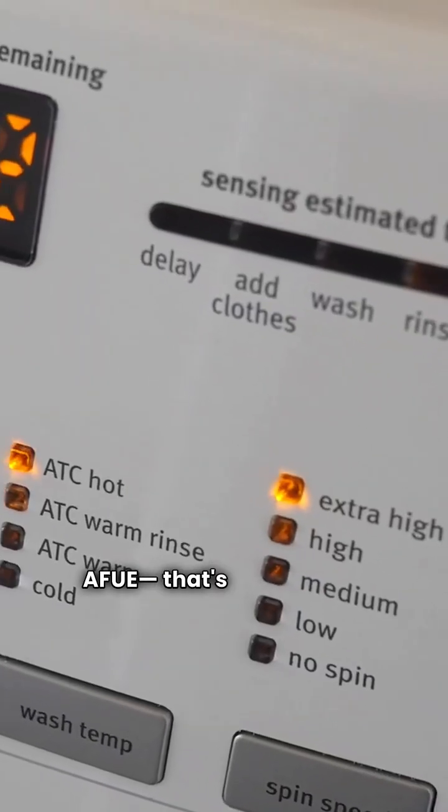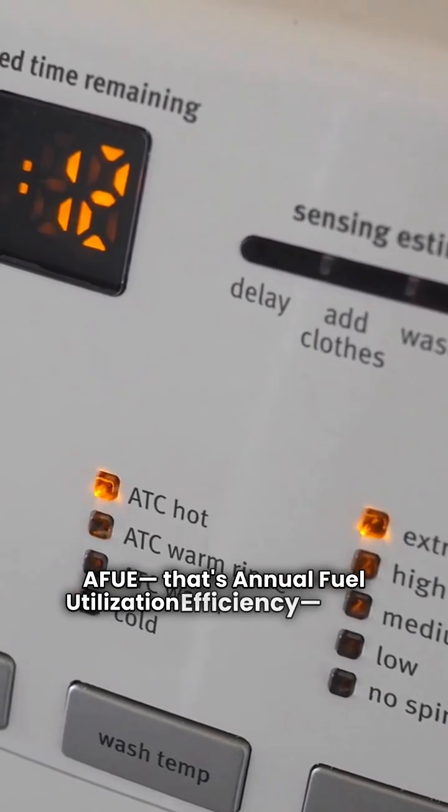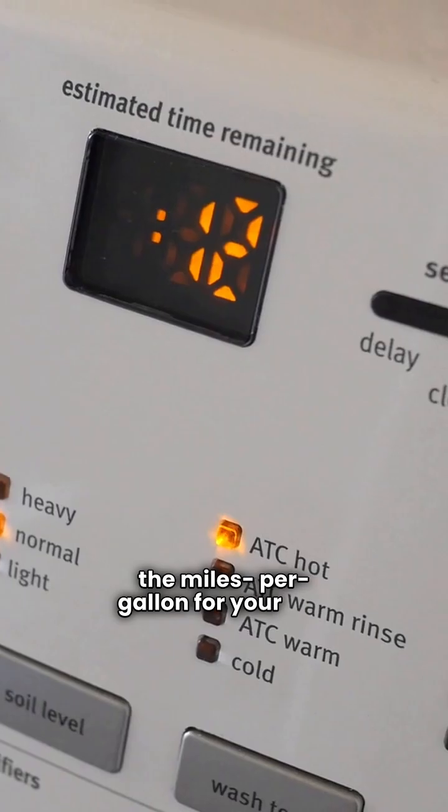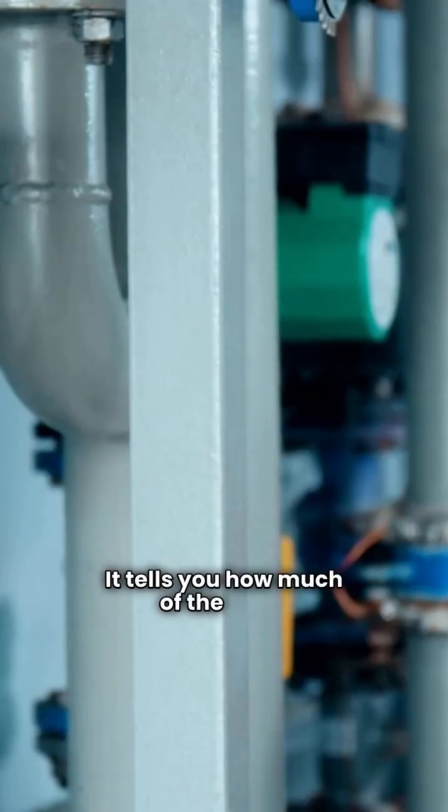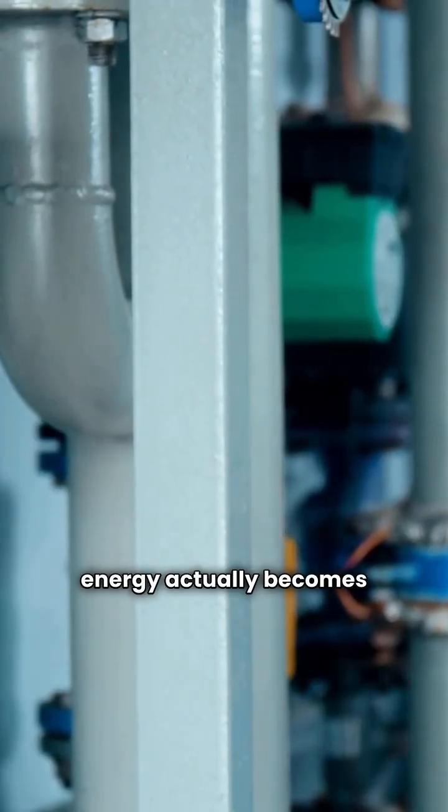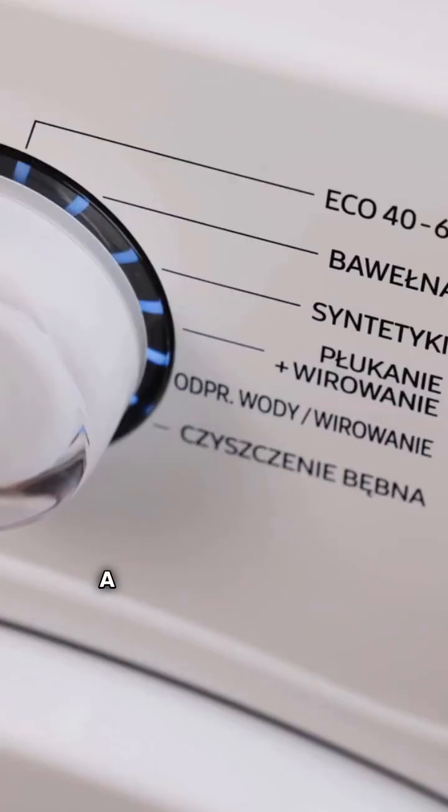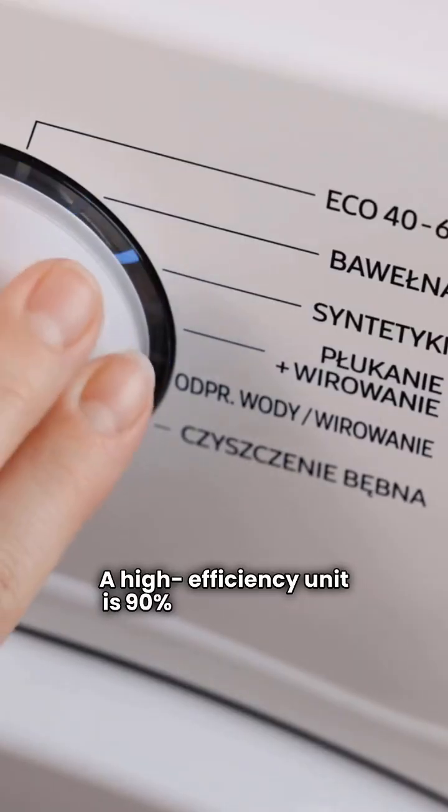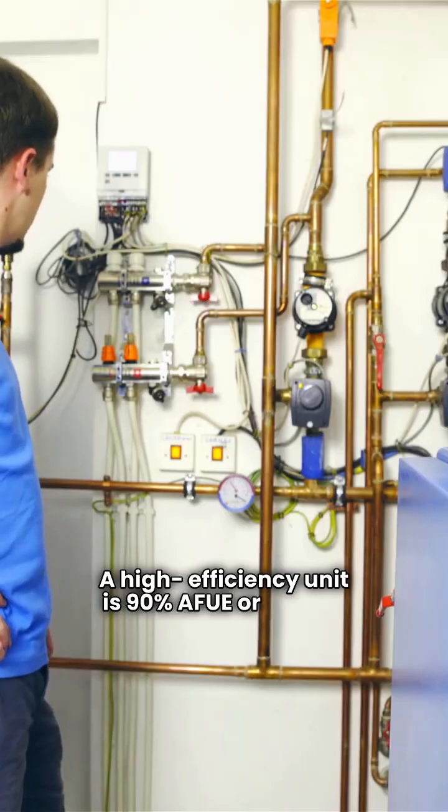AFUE, that's annual fuel utilization efficiency, is like the miles per gallon for your car. It tells you how much of the fuel's energy actually becomes heat for your home. A high efficiency unit is 90% AFUE or higher.